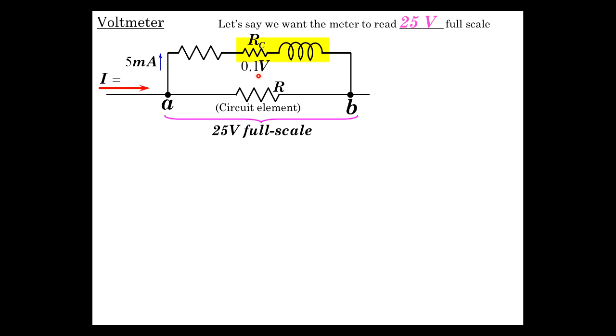But we already know we have 0.1 volts across this coil when there's a full scale reading. So the series resistance we're going to have to figure out what that is. It's going to have 24.9 volts across it so that there's a total of 25 when you got 5 milliamps flowing through this.